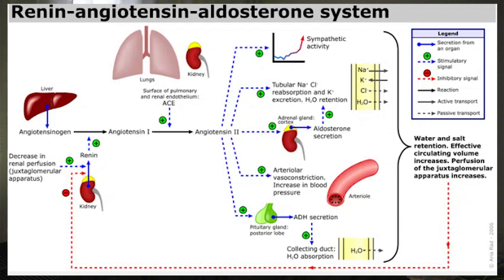Angiotensin 1 then goes into the lung where it is converted by angiotensin converting enzyme, or ACE, and this produces angiotensin 2. Angiotensin 2 has a variety of effects on the body. It stimulates the production of aldosterone from the adrenal gland, which works on distal convoluted tubules to absorb more sodium and causes you to lose potassium. Angiotensin 2 also helps absorb sodium directly; the absorption of sodium causes an osmotic gradient, water follows, and this causes more volume in your blood system, which can cause higher blood pressures.